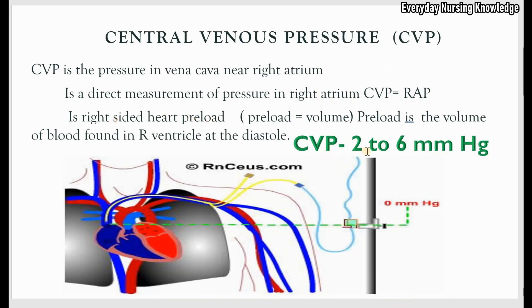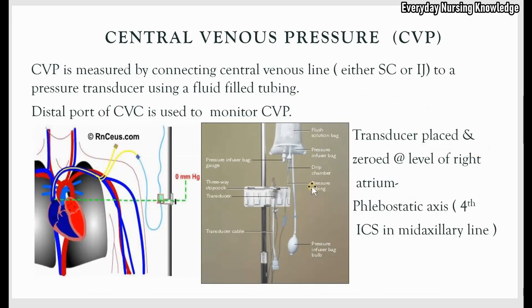Normal CVP is 2 to 6 mmHg in a spontaneously breathing patient. You can measure CVP by connecting a pressure transducer using fluid-filled tubing to the central venous access. You have to connect to the distal port of the CVC because the distal port remains close to the right atrium. This transducer is placed and zeroed at the level of the right atrium — that's called the phlebostatic axis, located at the fourth intercostal space, mid-axillary line.